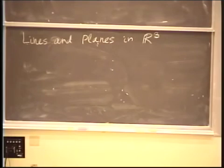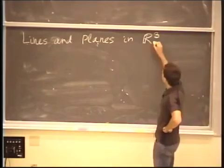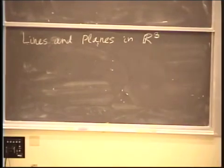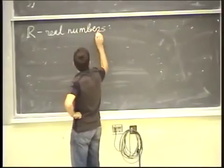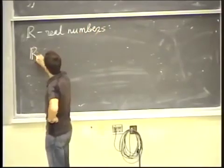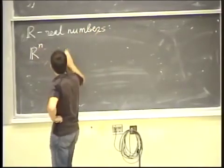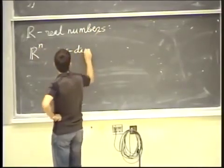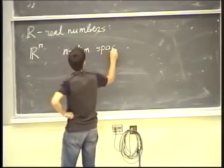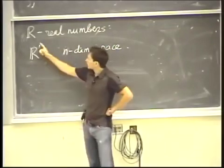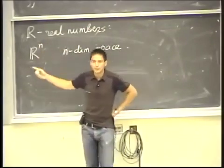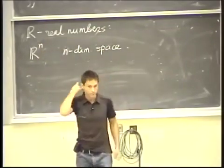From now on I will be using this notation: R3 for the three-dimensional space. R is for real numbers, and we write R to the N for the N-dimensional space. So R2 would be the plane, and R3 will be the three-dimensional space.